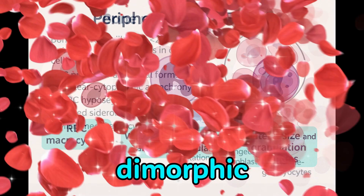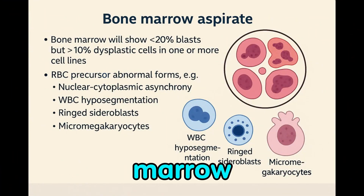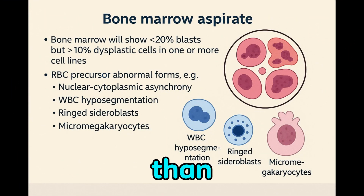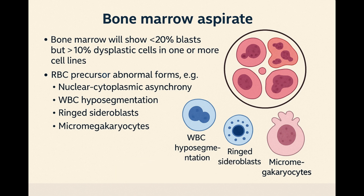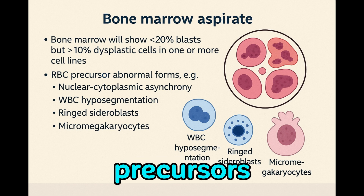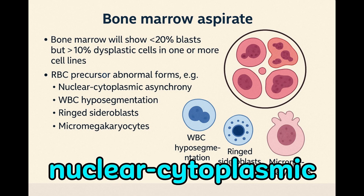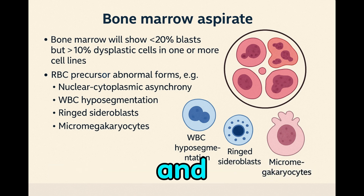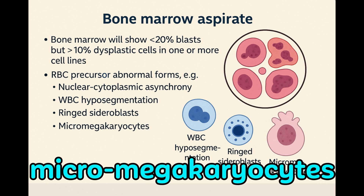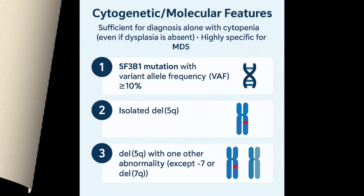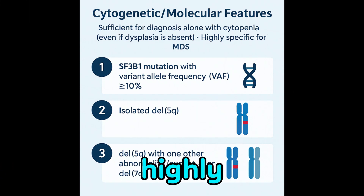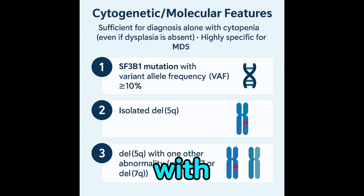A dimorphic picture may be seen. The marrow usually contains fewer than 20% blasts, but over 10% dysplastic cells. RBC precursors may show nuclear-cytoplasmic asynchrony and ringed sideroblasts on Perls stain. Micromegakaryocytes are a specific feature. Certain mutations are highly specific for MDS and sufficient for diagnosis with cytopenia, even if dysplasia is absent.